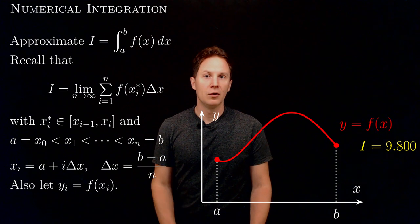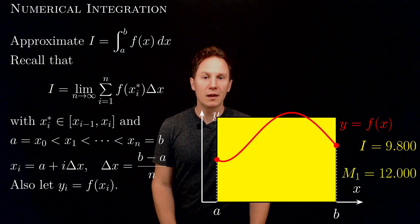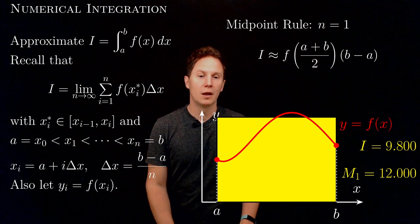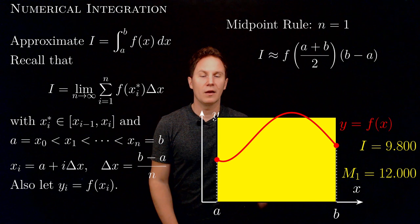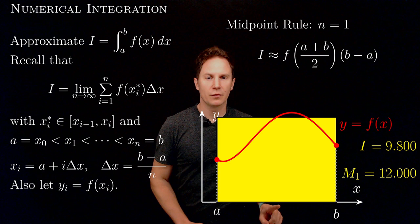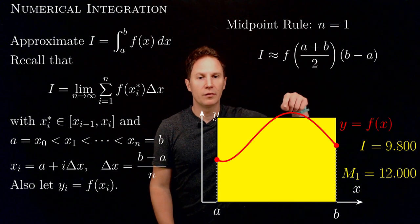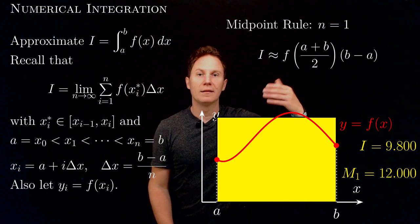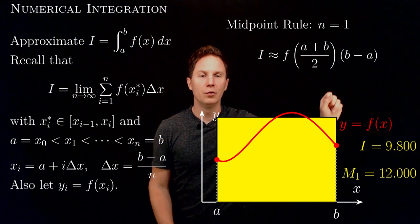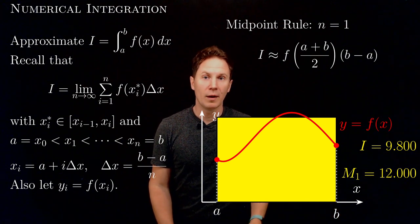A commonly used approximation, which you've already seen in the video on integrals, is to use the midpoint of each subinterval. This gives rise to the midpoint rule, where for the interval ab we find its midpoint — the average of a and b, that is a plus b over 2 — evaluate the function there to get the height of the rectangle, f of (a plus b) over 2, and multiply by the length of the base, b minus a.